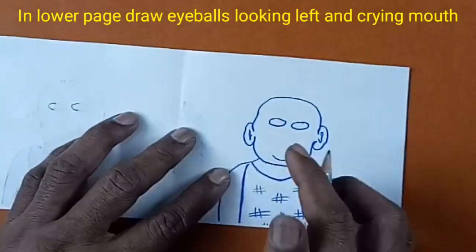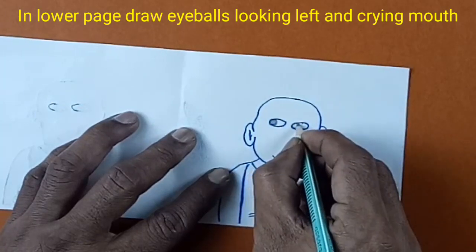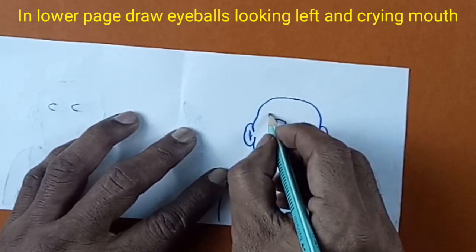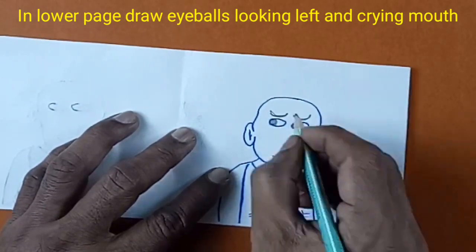In the lower page, draw eyeballs looking left side and crying mouth.